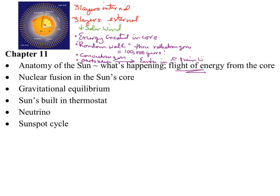With regard to what's happening in its core — the flight of the energy from the core outward — the energy is only created in the core. One of the videos we watched on the universe series talks about this random walk. It takes 100,000 years for it to get from the core through the radiative zone, then not so long through the convection zone, and then about eight minutes to travel from the surface of the sun to the Earth. I just think that is so cool.